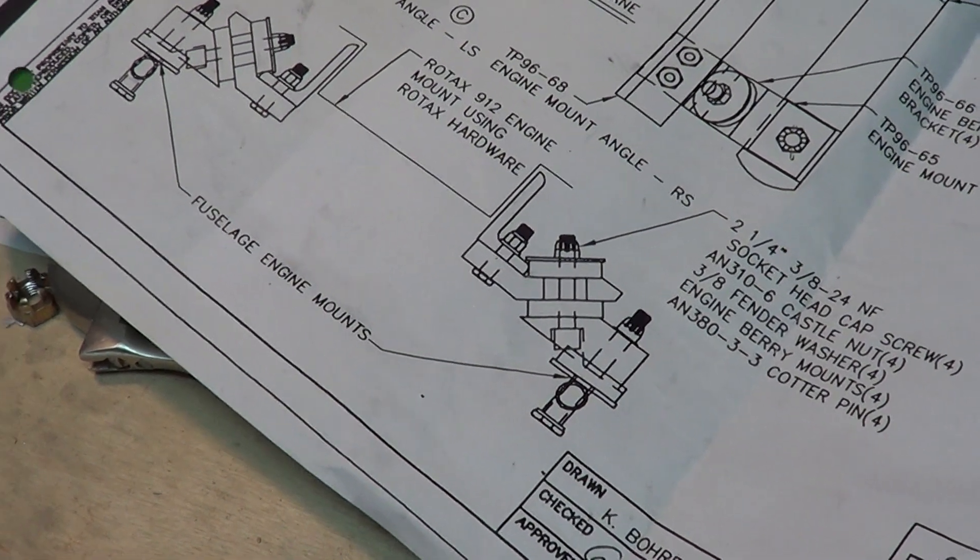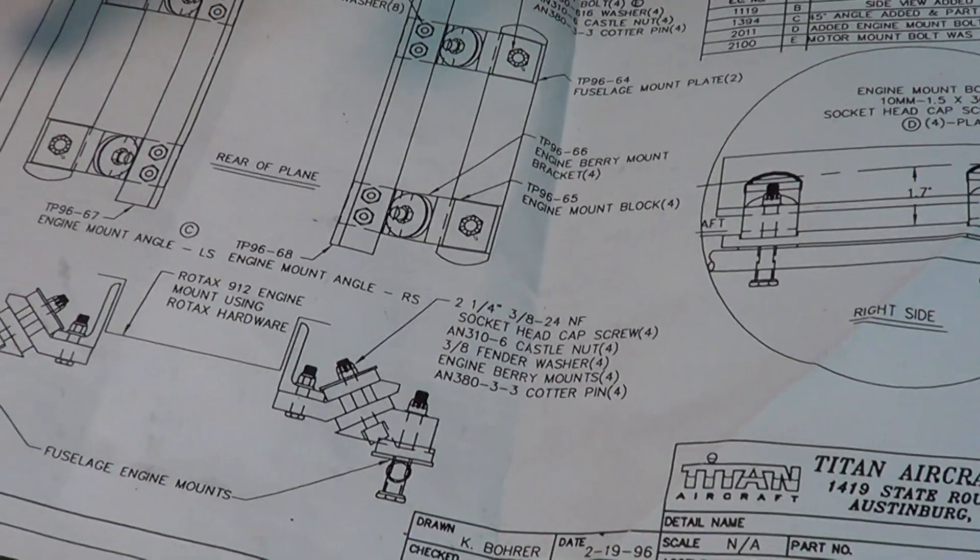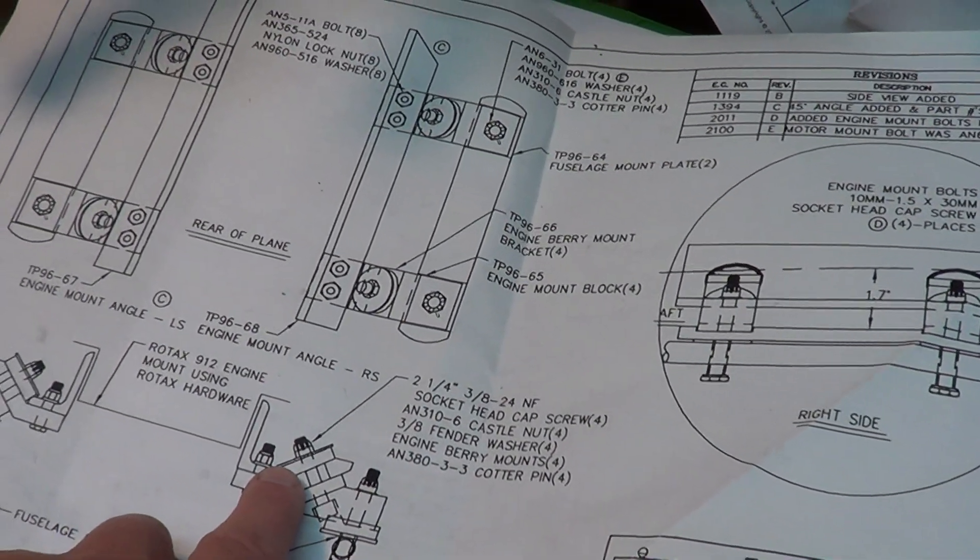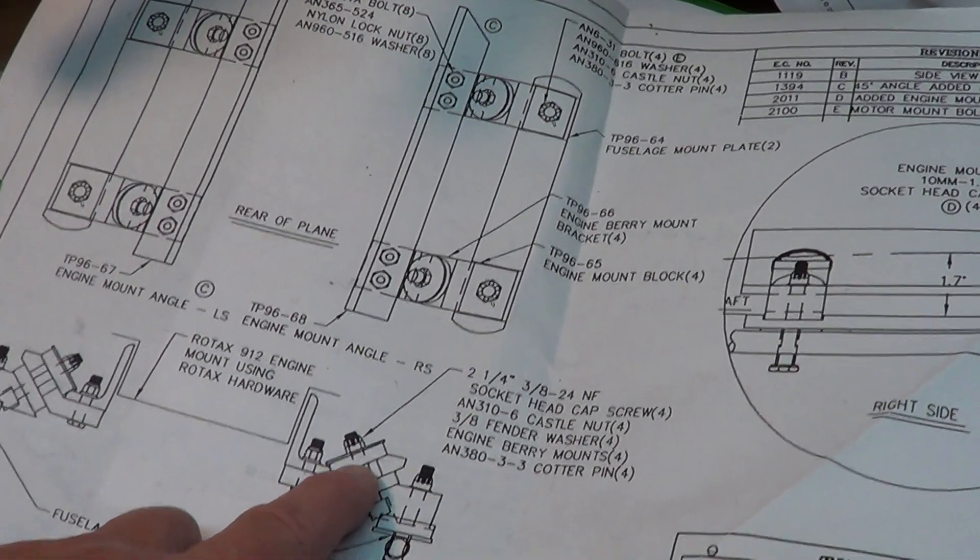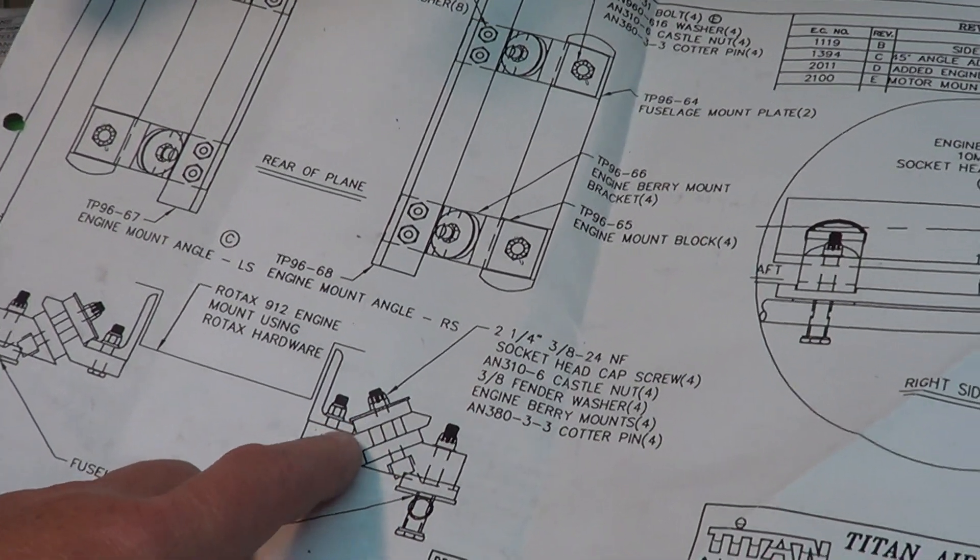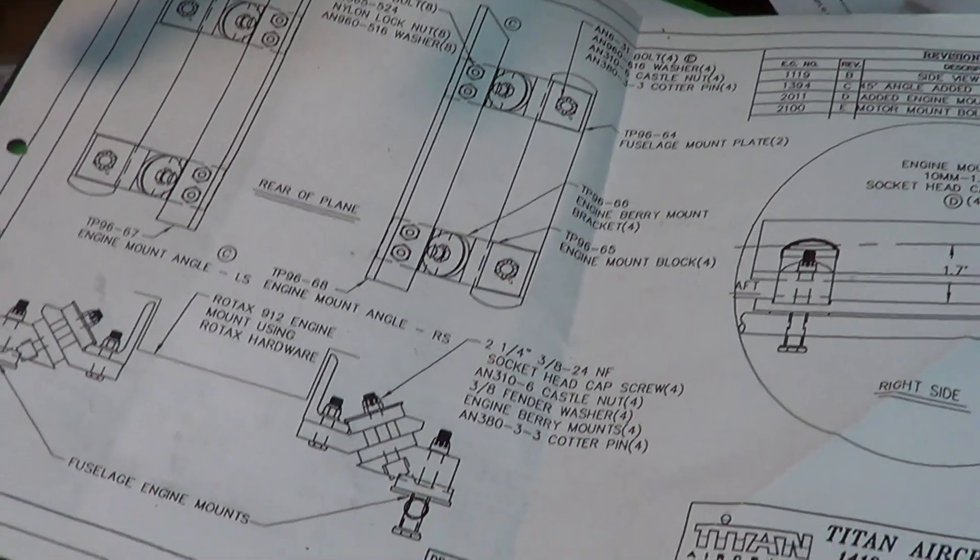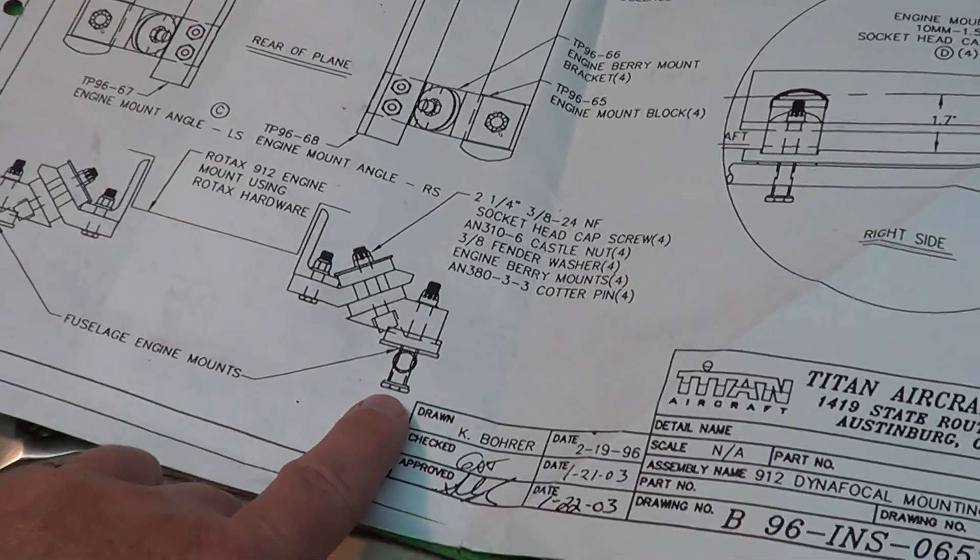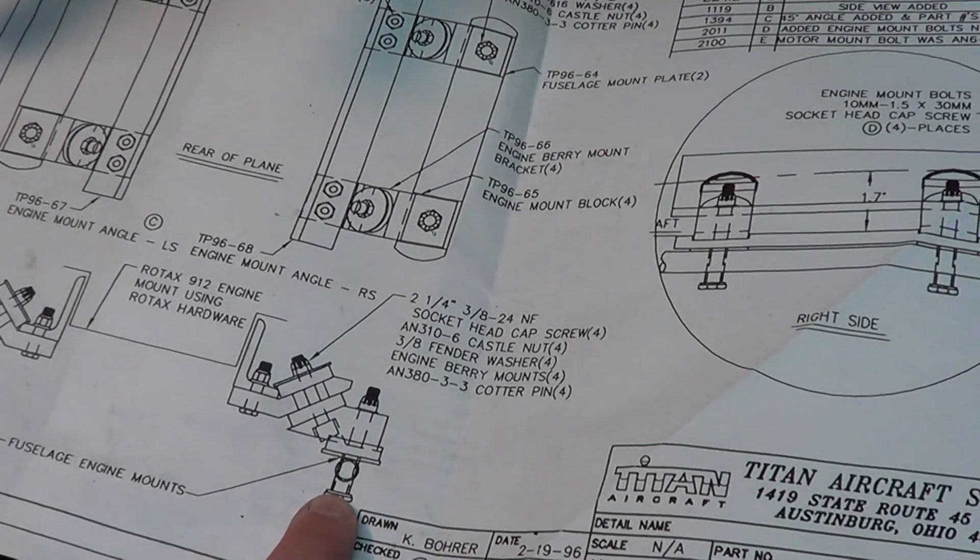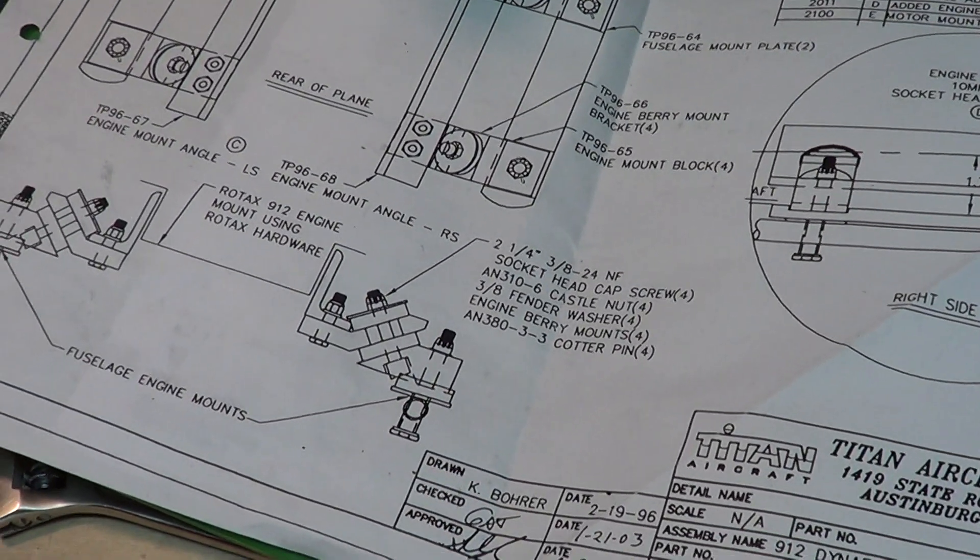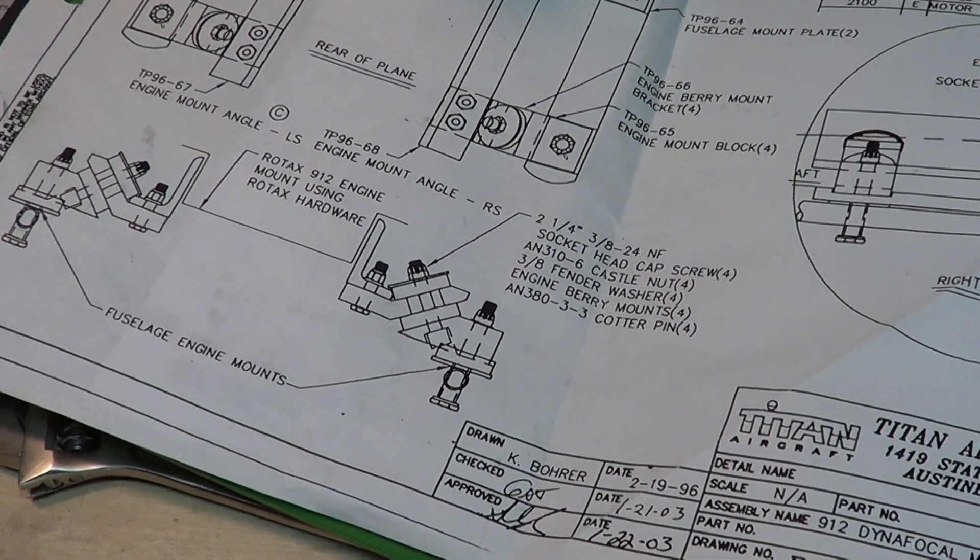And the other thing is there are no torque values on this drawing. In particular, I'm concerned about what kind of torque to be putting on the nut on the rubber bushings or any other torque values on here, like the main engine mount nuts. Does anyone know the torque values there? Thank you.